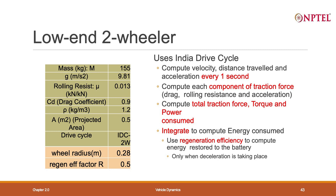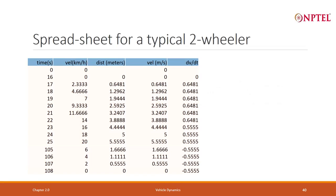Use the regeneration efficiency to compute the energy restored to the battery only when deceleration is taking place. This is the kind of spreadsheet you create. For a two-wheeler with the IDC, the velocity starts at 0. From 0 to 16 seconds, I do not write individual second rows — why? Because the velocity is going to be zero throughout.